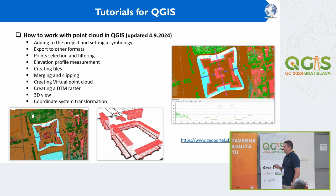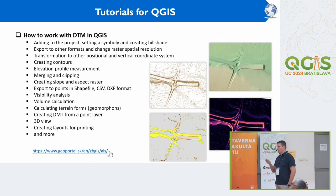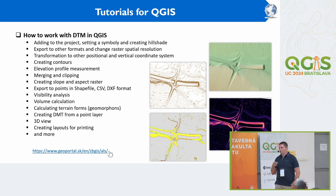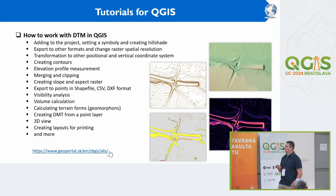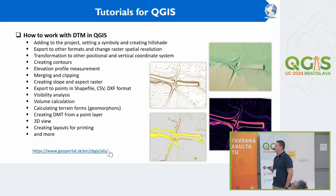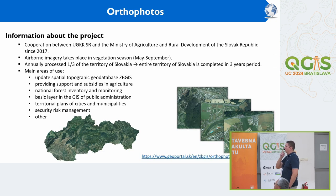The tutorials are available on the GeoPortal website, also in the Slovak language for our users. We also have tutorials for working with raster data — DTM or DSM — covering many tools such as visibility analysis, volume calculation, creating contours, and export to points in DXF or CSV format. These tutorials have more than 100 pages, so many functions are described there.